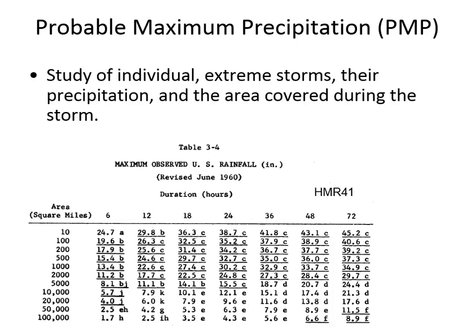The trend to note is that as the area increases, the maximum storm depth decreases, because there can be a very isolated, high-intensity concentration over a small area, but it's not physically possible to transport that much water over a large area. Also, increasing duration increases total storm amount, but intensities seem to decrease — between a six-hour and twelve-hour storm, the amount is much less than double, even though duration doubled.